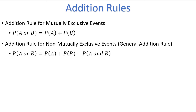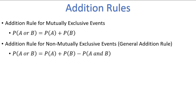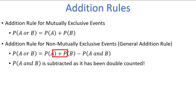So why are we subtracting the probability of A and B in this formula? It's because the probability of A and B actually gets double-counted — once when we add the probability of A, and once when we add the probability of B. We only want to count it once, so we must subtract it off to get the correct probability.